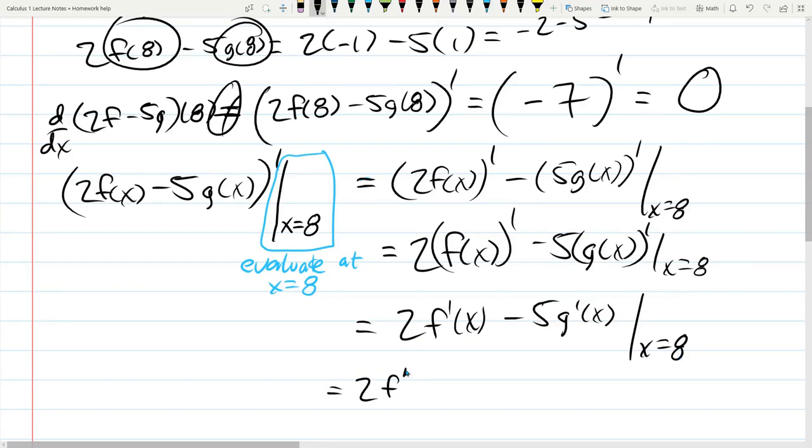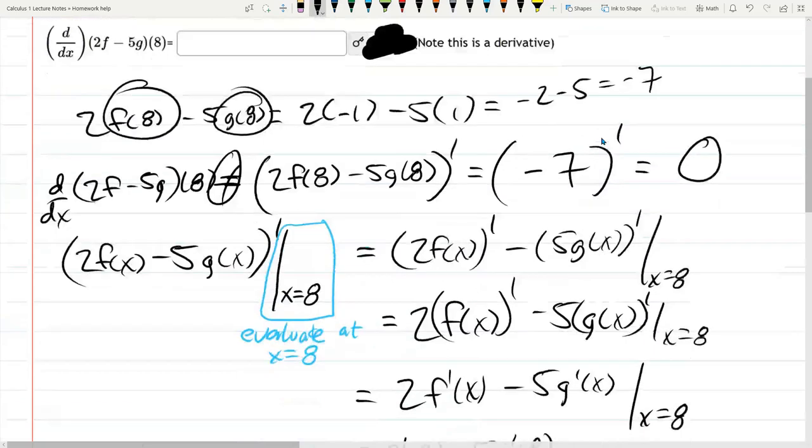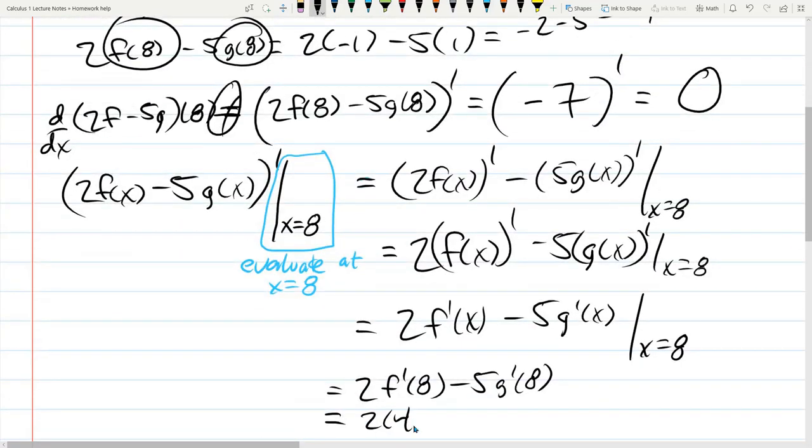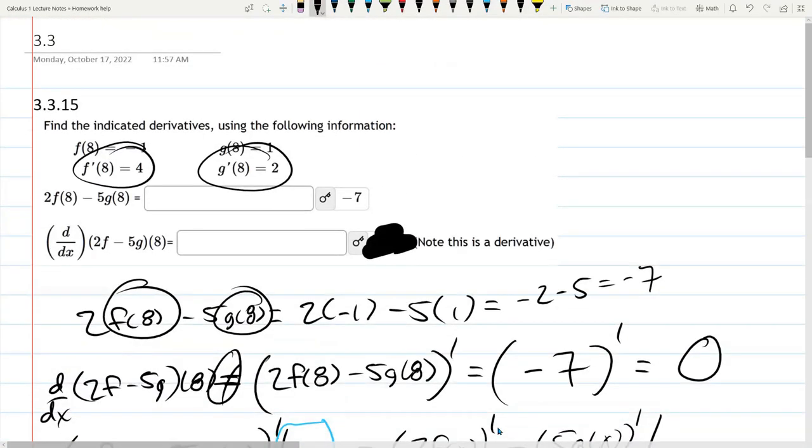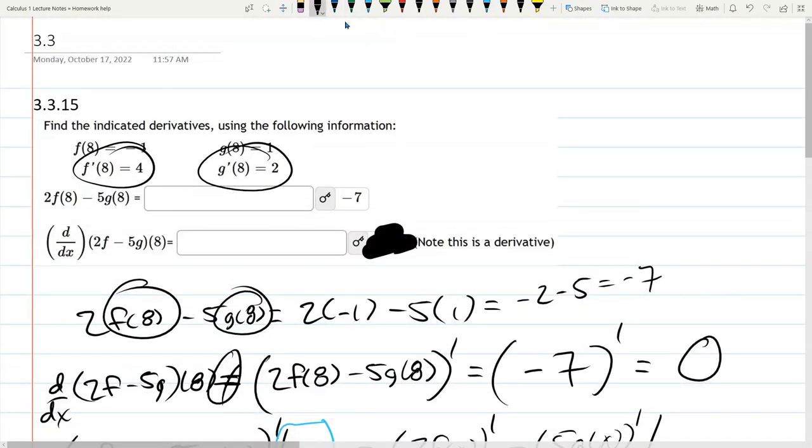So we have 2f'(8) minus 5g'(8). And these values are given up above. Notice they are not the same as regular f(8) and g(8). These are the f'(8) and g'(8). So f'(8) is 4, g'(8) was 2. And this is 8 minus 10, negative 2. And we'll uncover that. Negative 2.